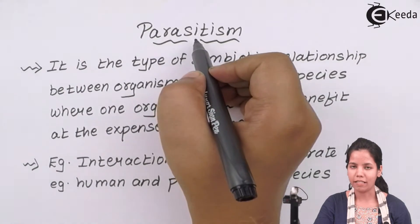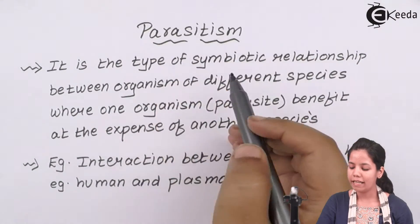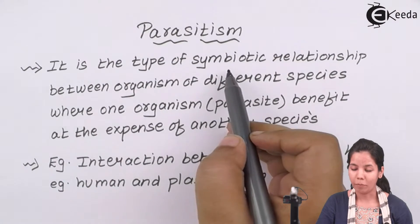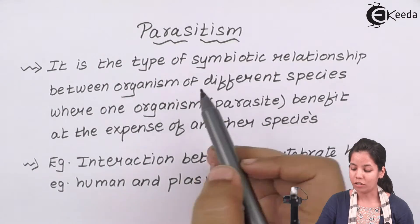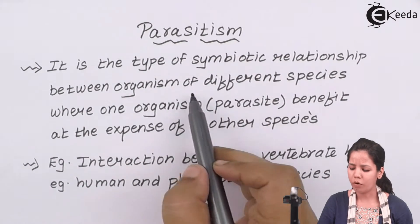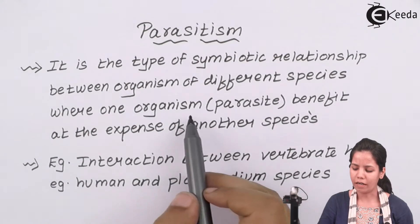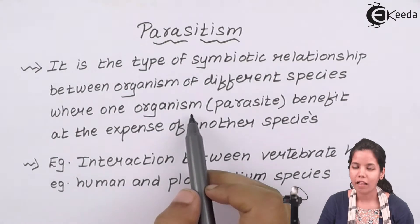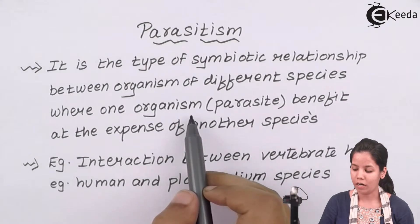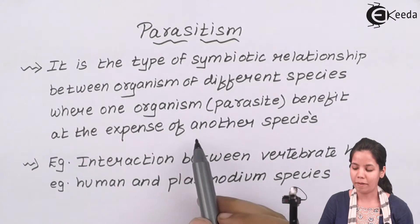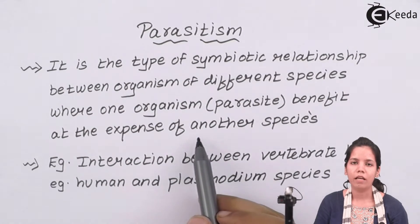Parasitism is a type of symbiotic relationship between organisms of different species, in which one organism — the parasite, the harmful one — is always benefited at the expense of another organism.